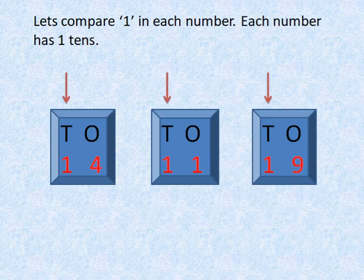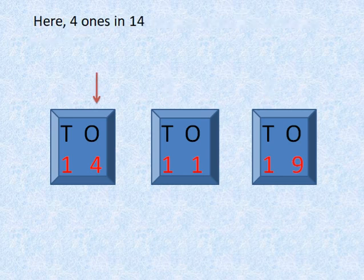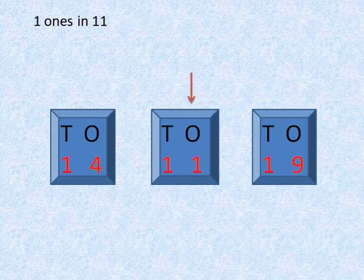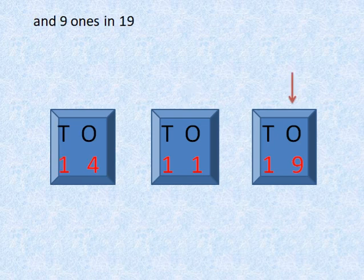Let us compare the ones in each number. Each number has 1 tens. Here 4 ones in 14, 1 ones in 11, and 9 ones in 19.